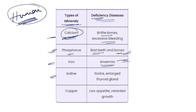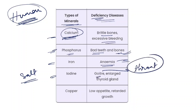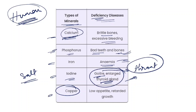Iodine is important and is contained in salt. If we don't consume iodine, the throat portion is affected — Goiter will appear, affecting the thyroid gland which is situated in the throat. Because of lack of iodine, the thyroid gland enlarges. Copper deficiency also causes deficiency diseases like low appetite and retarded growth — your growth will not be normal, meaning growth is suppressed because of lack of copper.